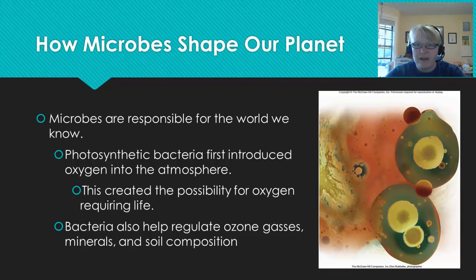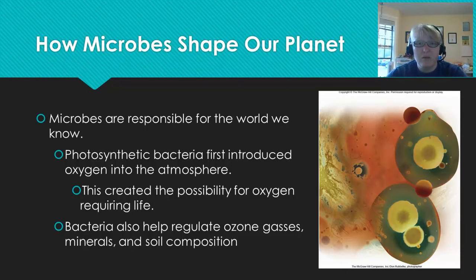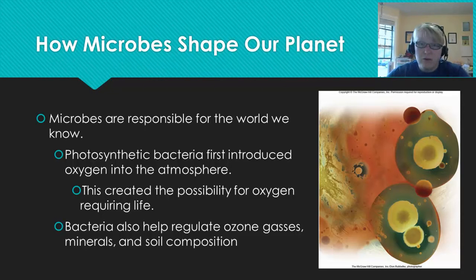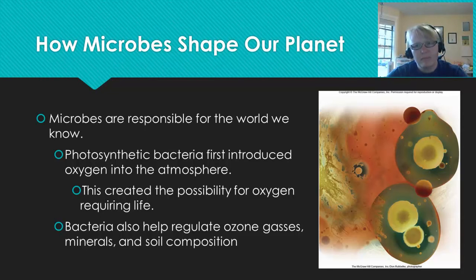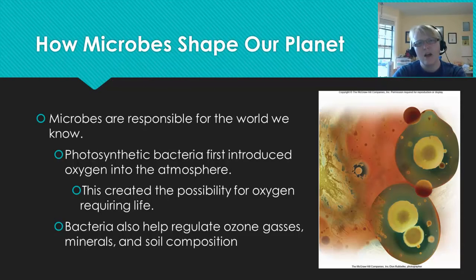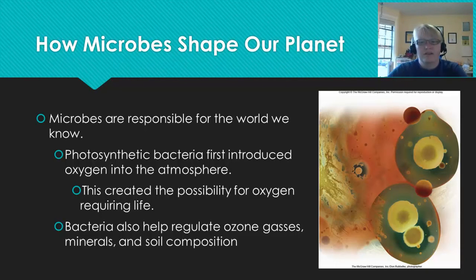Let's talk about how microbes shaped our planet. Remember, prokaryotes had the Earth to themselves for almost 2 billion years, and they were doing a lot of work during that time. One of the largest contributions they made was adding oxygen to our atmosphere — life as we know it wouldn't exist without that. Bacteria and other microbes also helped shape our soil composition, mineral usage, and ozone gases. So remember, when we think about microbes, we're not only talking about pathogenic ones. We're also talking about the ones that make your corn sweet or allow trees to bloom. Microbes are not all bad.